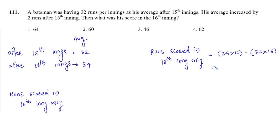34 into 16: 16 into 30 is 480, 16 into 4 is 64, 480 plus 64 is 544. 32 into 15: 15 into 30 is 450, 15 into 2 is 30, 450 plus 30 is 480. This subtraction equals 64. So the number of runs scored in 16th innings only is 64.